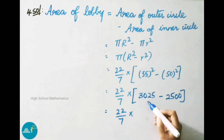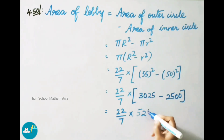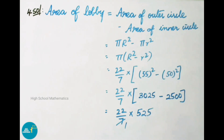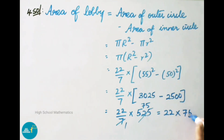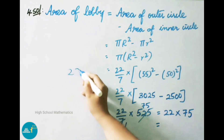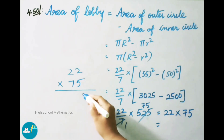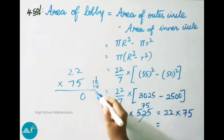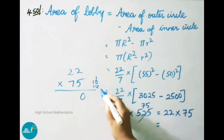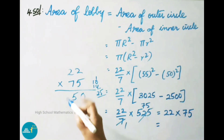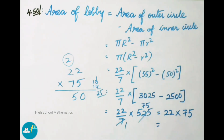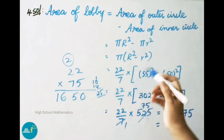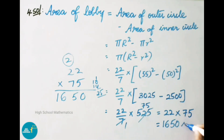That equals 22/7 into (3025 − 2500) = 22/7 into 525. Cancellation: 7 × 75 = 525. Now multiply 22 × 75: vertically 5 × 2 = 10, write 0 carry 1; cross multiply 5 × 2 = 10 and 7 × 2 = 14; 10 + 14 = 24, plus 1 = 25, write 5 carry 2; vertically 7 × 2 = 14, plus 2 = 16. So 22 × 75 = 1650 square meters. Therefore, area of lobby is 1650 square meters.